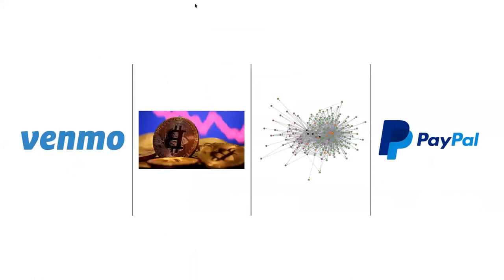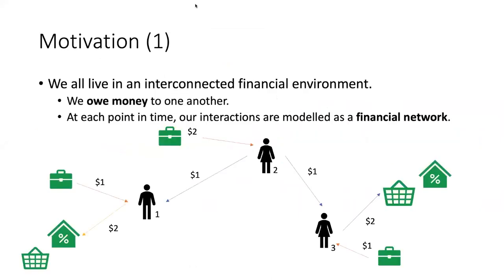We live in a world that's financially interconnected. We get our wages, pay our rent and groceries, and perform financial transactions on the web. Today's world is filled with such financial networks — Venmo, cryptocurrencies, banking networks, and PayPal, to name a few. In such platforms, people exchange money in the form of digital payments and form financial ties. In real life, all these transactions can be modeled with a financial network.